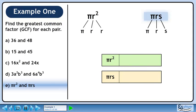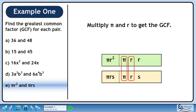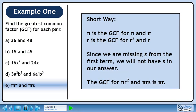We need to organize all of our work. Place the prime factors into their respective containers. We have a pair of π's and a pair of r's. Multiply π and r to get the greatest common factor. The greatest common factor of πr² and πrs is πr. We recognize that π is the greatest common factor for π and π, and r is the greatest common factor for r² and r. Since s is missing from the first term, we will not have s in our answer.